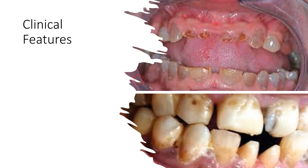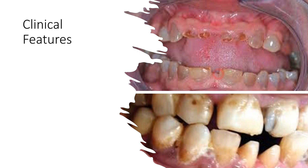Moving on to clinical features: as you can appreciate in these clinical pictures, there is yellowish, brownish, and grayish discoloration throughout the dentition, and attrition of the teeth as well. Dentinogenesis imperfecta affects both genders equally — males and females are affected equally.